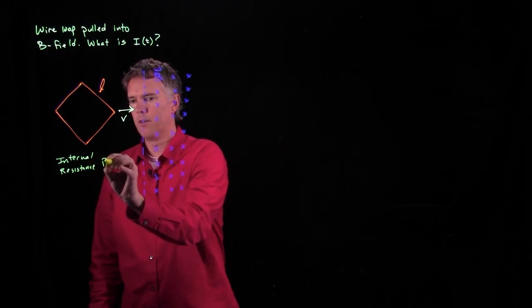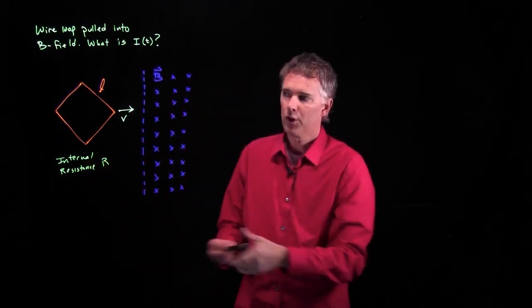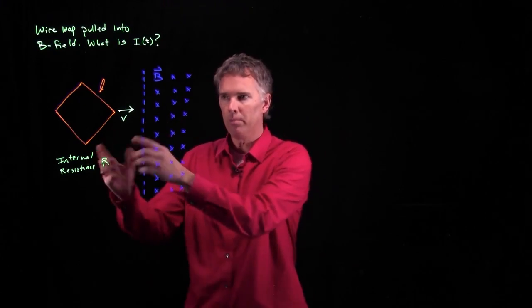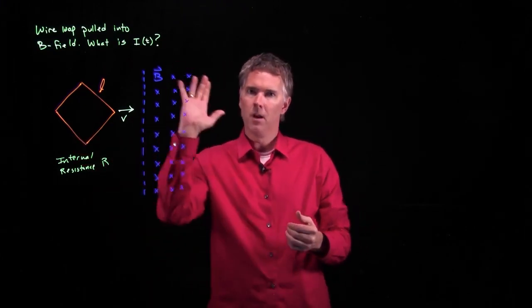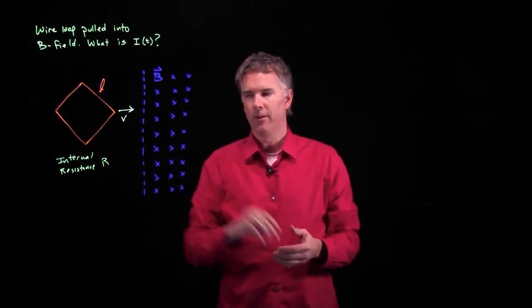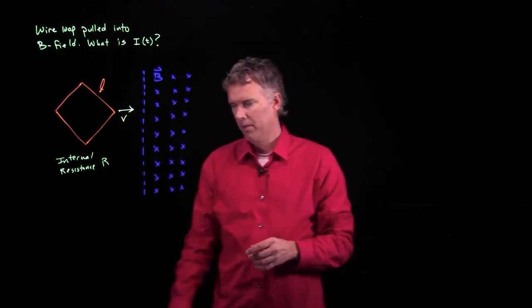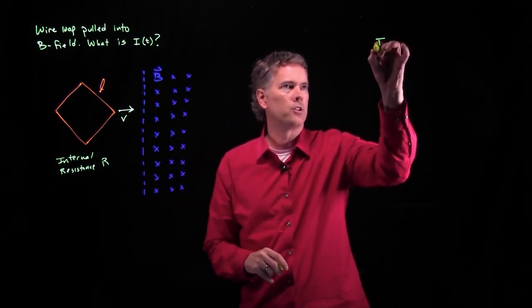Let's see if we can figure out what happens to the current in the loop as it starts to cross this intersection between B field and no B field. So how do we think about this? Well, this is of course induction.